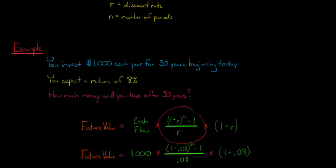This is just this formula here, and I just plugged in the numbers from our problem above. And then we're going to multiply that by 1 plus the discount rate, which is 1 plus 0.08.